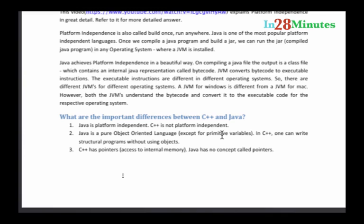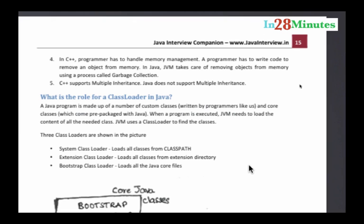Whereas Java has no concept called pointers, therefore Java programs are much more secure. With C++ you can access the memory, and there are ways to avoid it which makes it really complex. But Java is much more secure. A program would not be able to access anything other than what's really allowed for it.